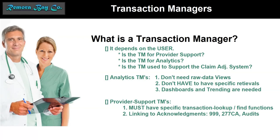If you're looking at a provider-supported transaction manager, it's almost the opposite of analytics. You have to have a specific transaction lookup — you can't have 98% success, you have to have 100%. A quality TM should hook up the 277 CA, and beyond that, nice-to-haves would be the audits, the 999s, or even TA1s. That's the difference between those two.